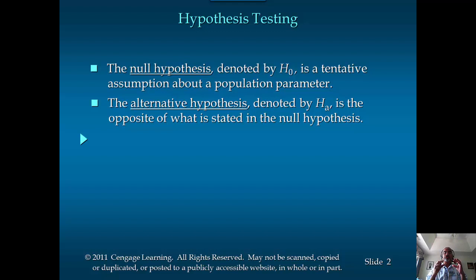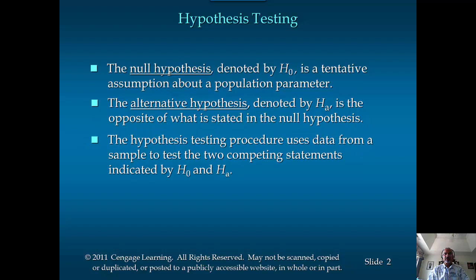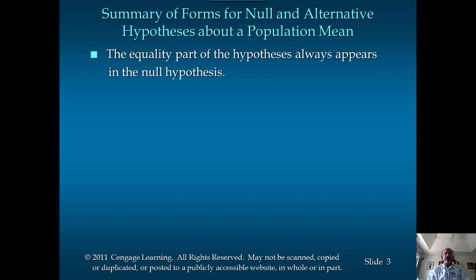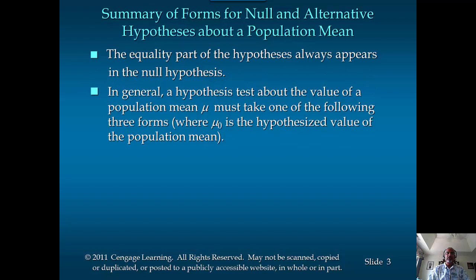We'll denote the alternative hypothesis with the symbol H sub A. We have to collect sample data, and based on the sample data, we make a decision about the hypothesis. We use mu as the mean of the population, and mu sub zero is a constant value assumed in the hypothesis — it can be any number. Mu represents the unknown population mean, while mu sub zero represents a specific constant number.